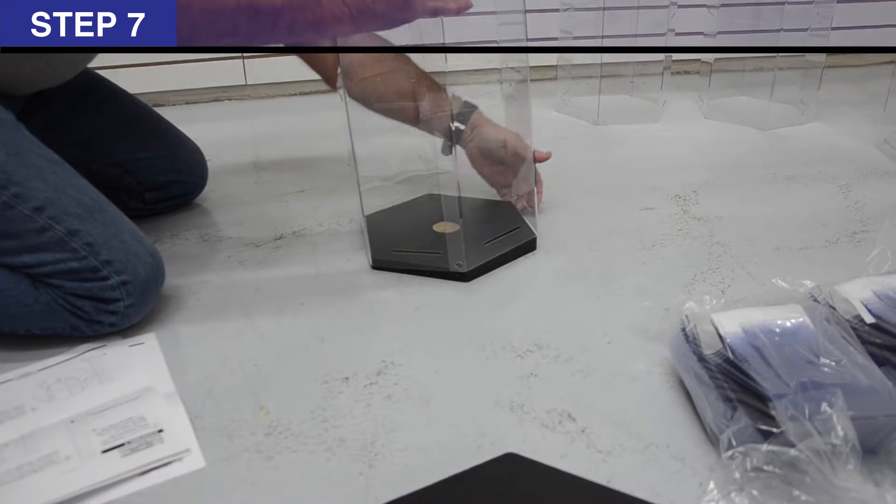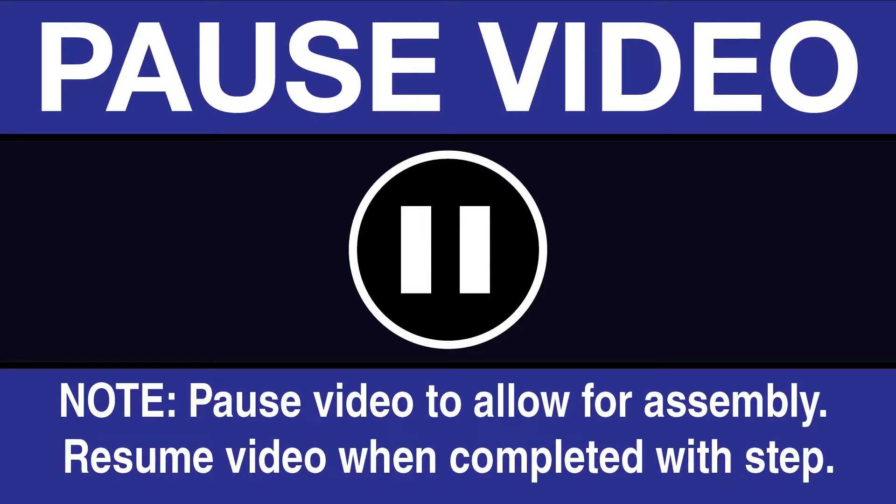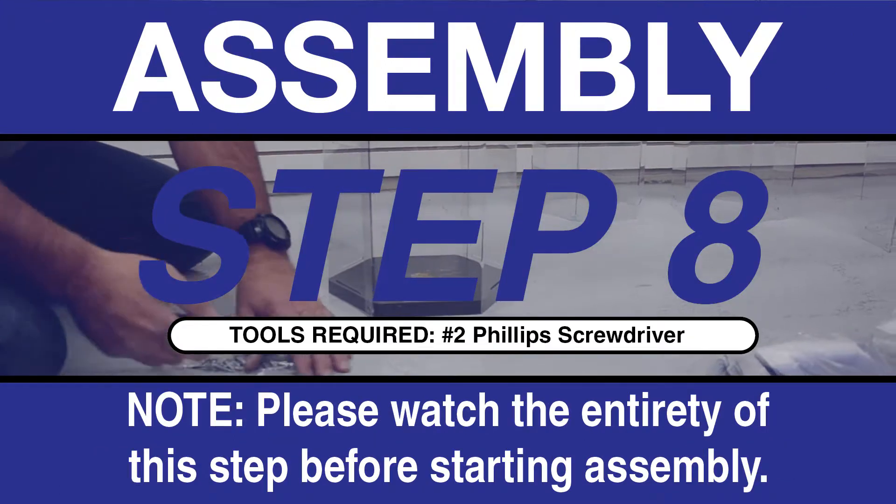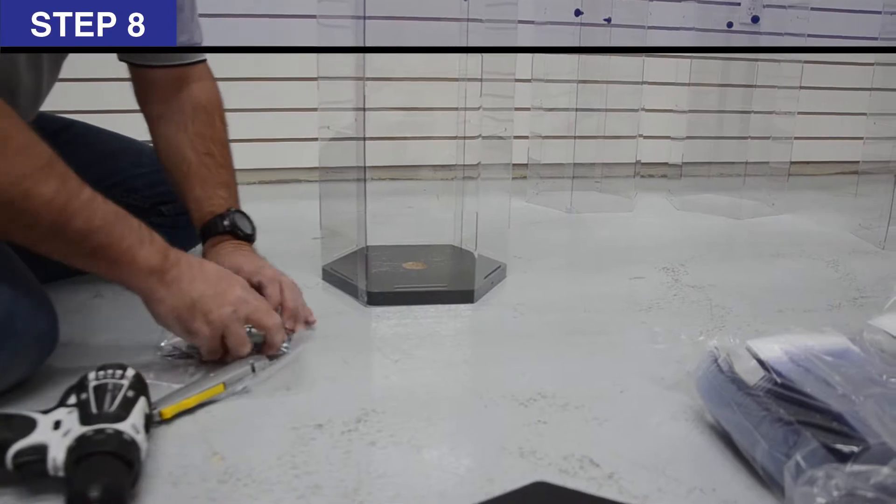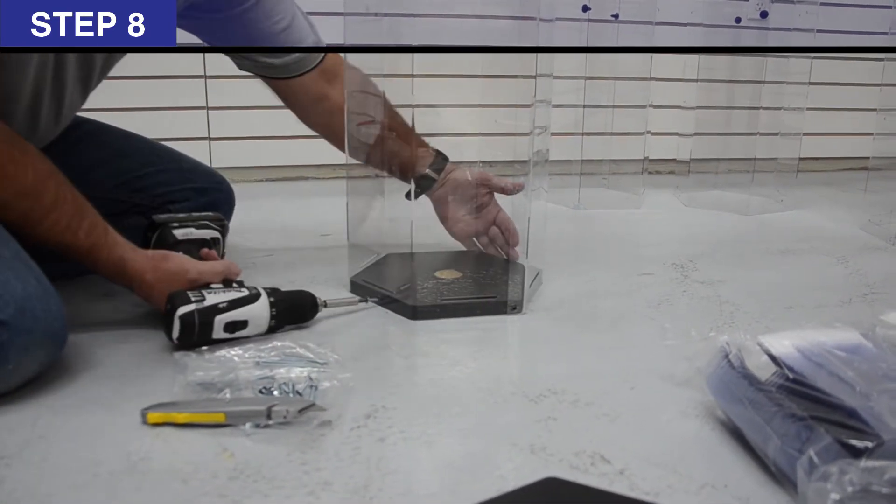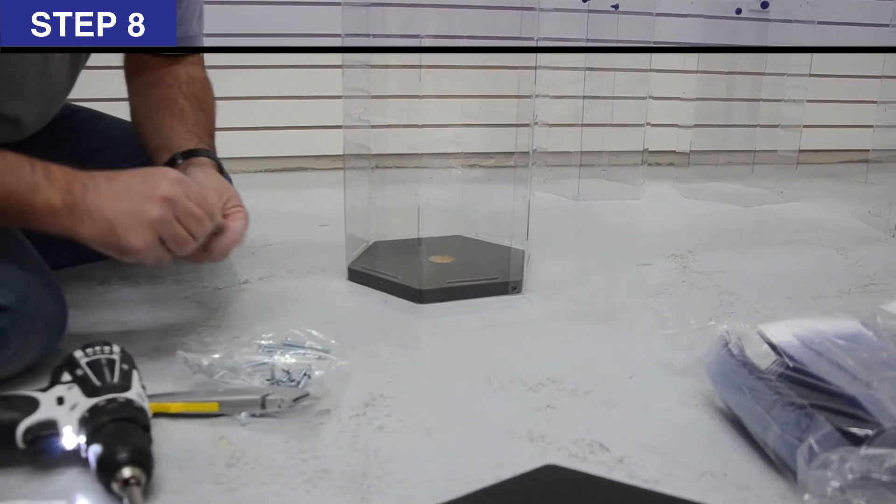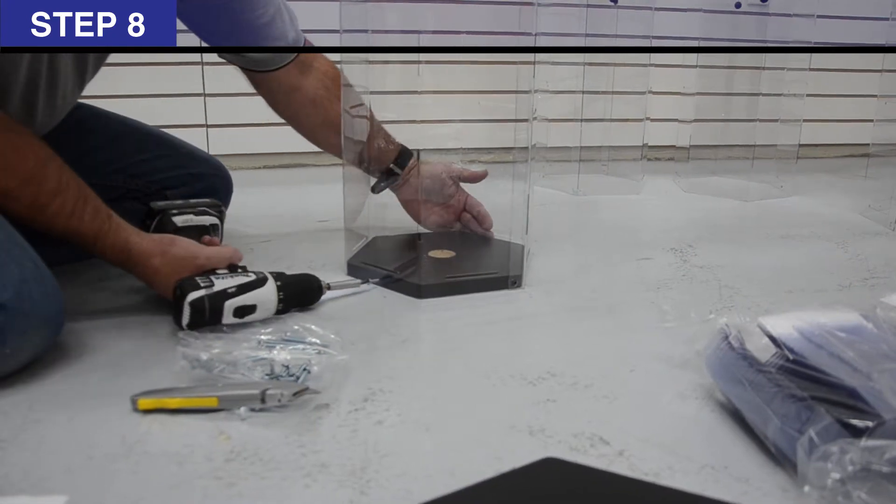Step 8: Secure tower panel assembly M to spinner plate P at middle holes of tower panel assembly. Attach tower panels to spinner plate edge with 2, 3/4 inch truss head screws I. Don't tighten completely.